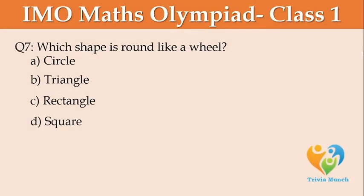Which shape is round like a wheel? A: circle, B: triangle, C: rectangle, D: square.